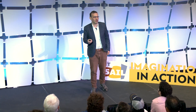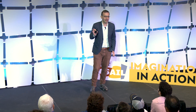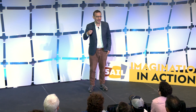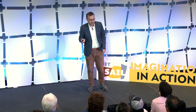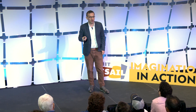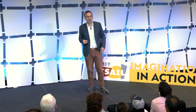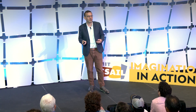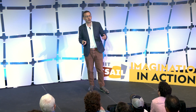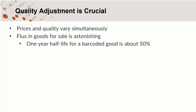The flux in goods on the shelf is absolutely amazing. The one-year half-life of a barcoded good is about 50%. In other words, next year, go to the shelf, and half those goods will have disappeared and been replaced by something new.